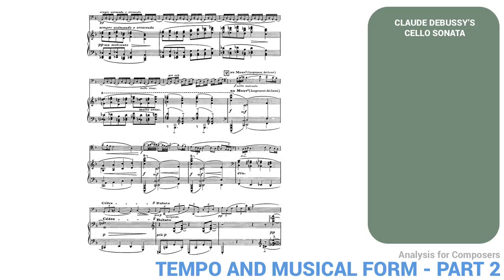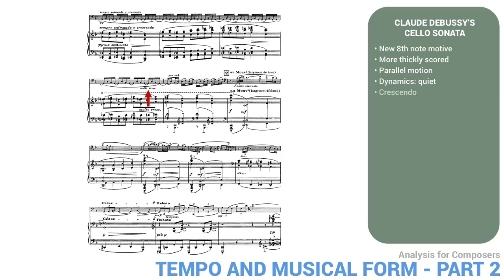Then, in the fifth bar before rehearsal number two, the piano changes to a new eighth-note motive. Slower than the preceding 32nd notes, it's now much more thickly scored than anything up to this point, although entirely in parallel motion. Parallel motion is a way of keeping the texture from becoming too heavy, as there are no really independent inner parts or bass line. Despite three little tentative crescendi, the dynamics stay quiet. Finally, just before rehearsal number two, both piano and cello explode into a huge crescendo. The cello at last abandons its three-note obsession, rising now up to the climax of the whole movement. The piano also reverts to independent part writing, emphasizing G in the bass, which acts like a dominant to the following low C that arrives at rehearsal two.